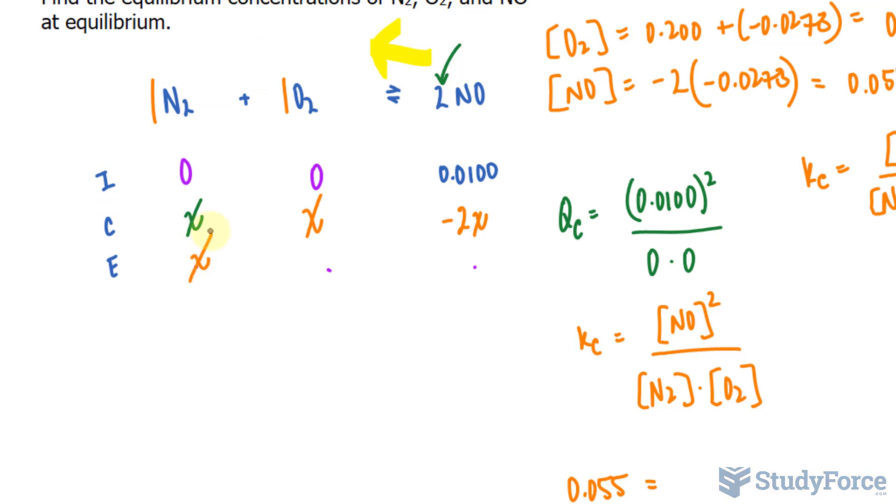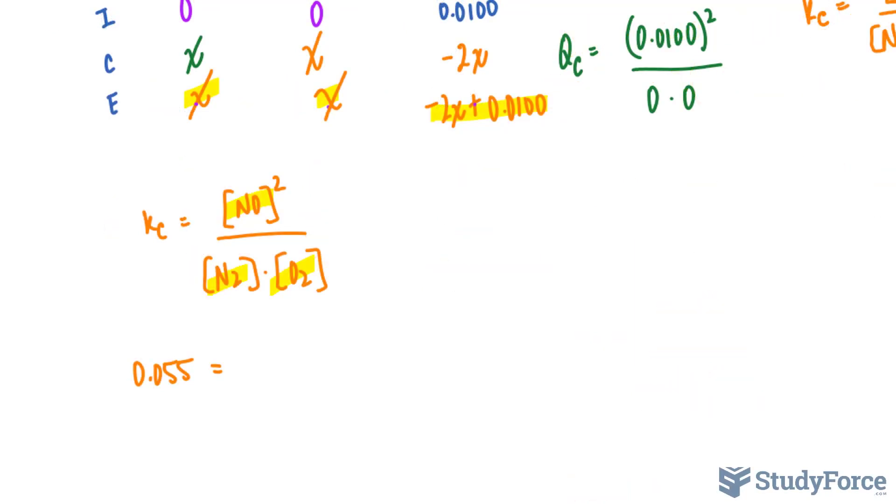So 0 plus X is X. Again, X. And over here, we have 0.0100 plus negative 2X. That's the same thing as saying negative 2X plus 0.0100. I'm going to substitute these algebraic expressions right into where they belong. And then we can start to solve. Let's go ahead and do that now.